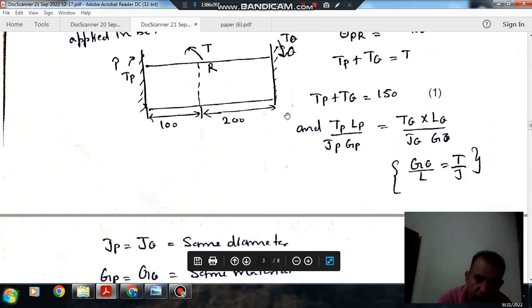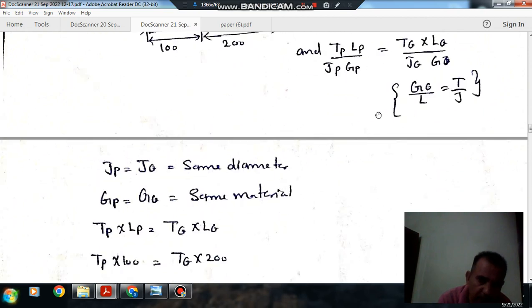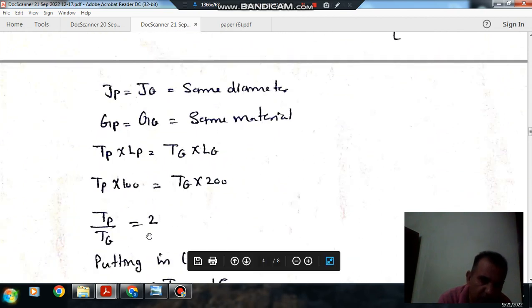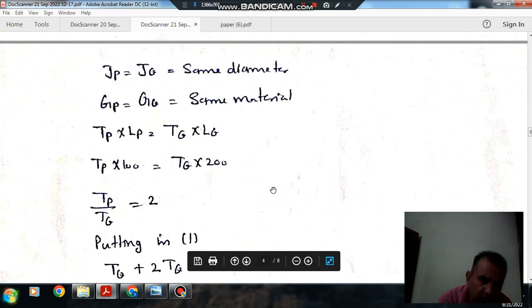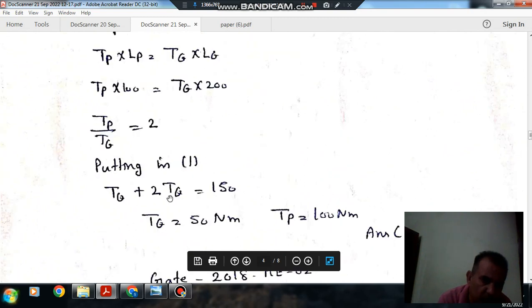This is equation number 2. Putting the value of Tp by Tq as 2 in equation 1, we have Tp equals 2 Tq. So 2 Tq plus Tq equals 150, giving 3 Tq equals 150.